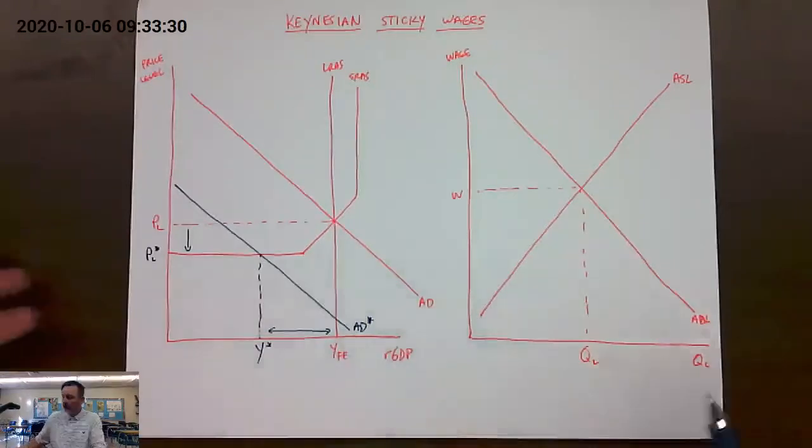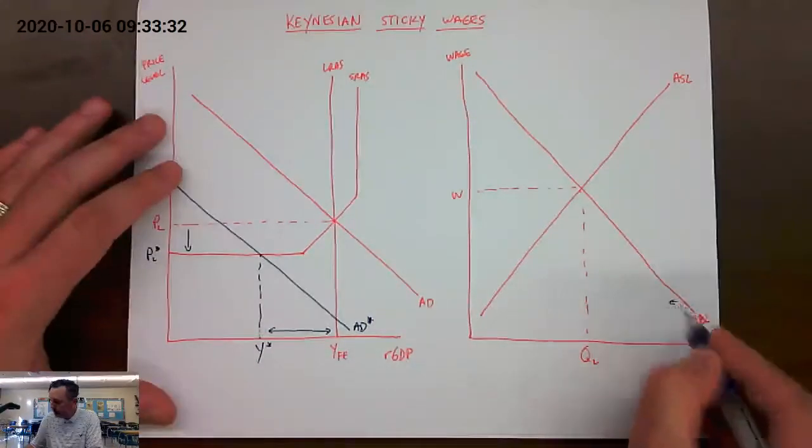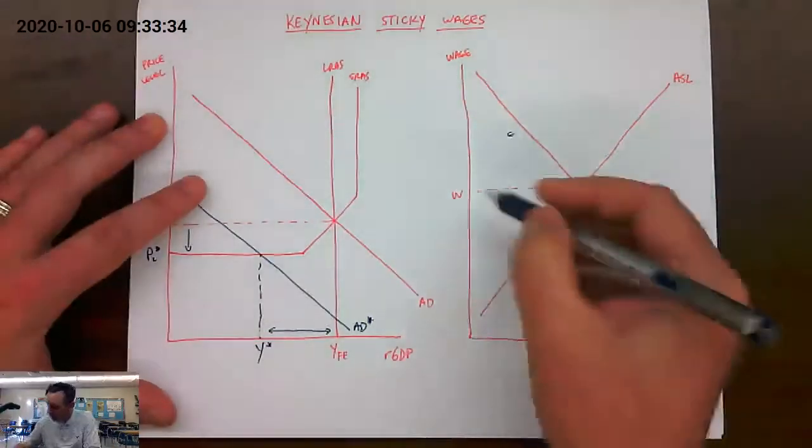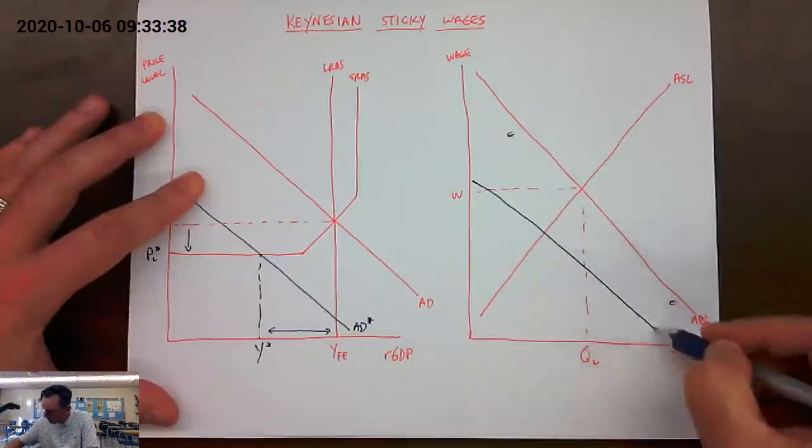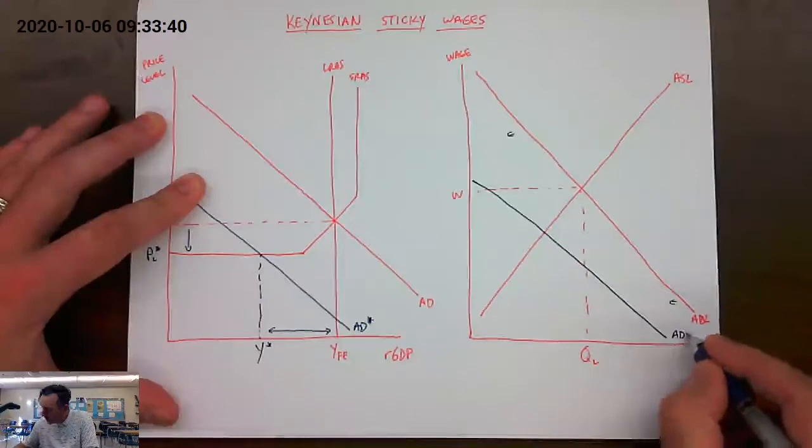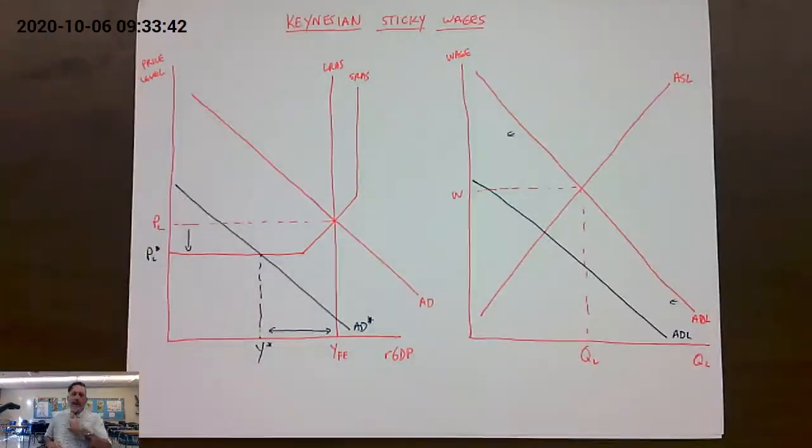the aggregate demand for labor is going to shift leftward. We don't need as many workers because there's not as much output to produce. So this aggregate demand for labor is going to shift leftward. So there's our new aggregate demand for labor.